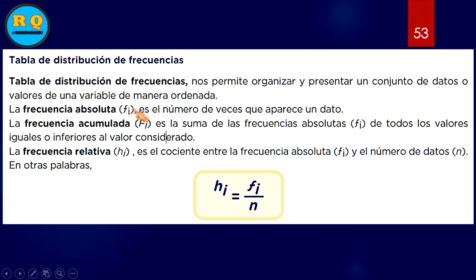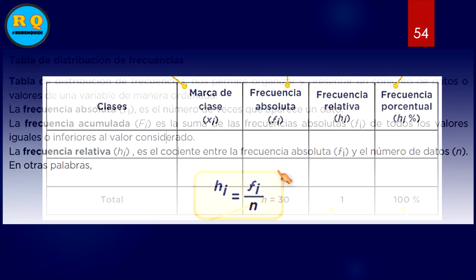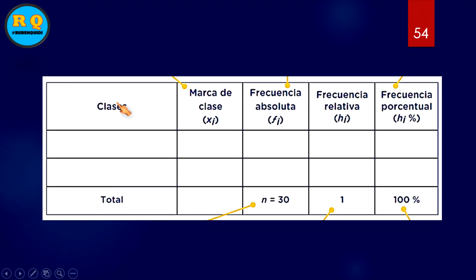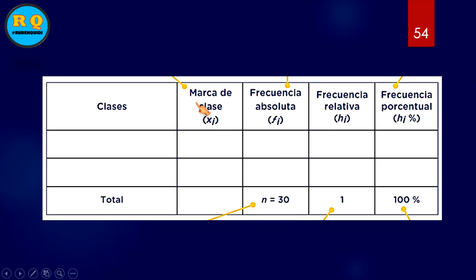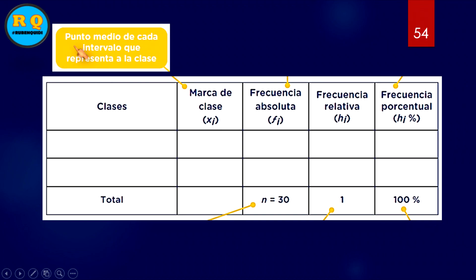Ahora vamos a repasar la frecuencia absoluta, la frecuencia acumulada y la frecuencia relativa. Esto ya viene a ser para datos agrupados; lo anterior era para datos no agrupados. Las partes de una tabla de frecuencias son: la clase, la marca de clase cuyo símbolo es xi, la frecuencia absoluta fi, la frecuencia relativa hi y la frecuencia porcentual h%.